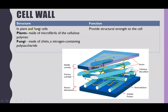The cell wall is found in plant and fungal cells, but not in animal cells. In plants it is made of the carbohydrate cellulose, whereas in fungi it is made of chitin, which is also a polysaccharide but one that contains nitrogen. The function, whether in plant or fungal cells, is to provide structural strength — both cellulose and chitin are very strong in structure.